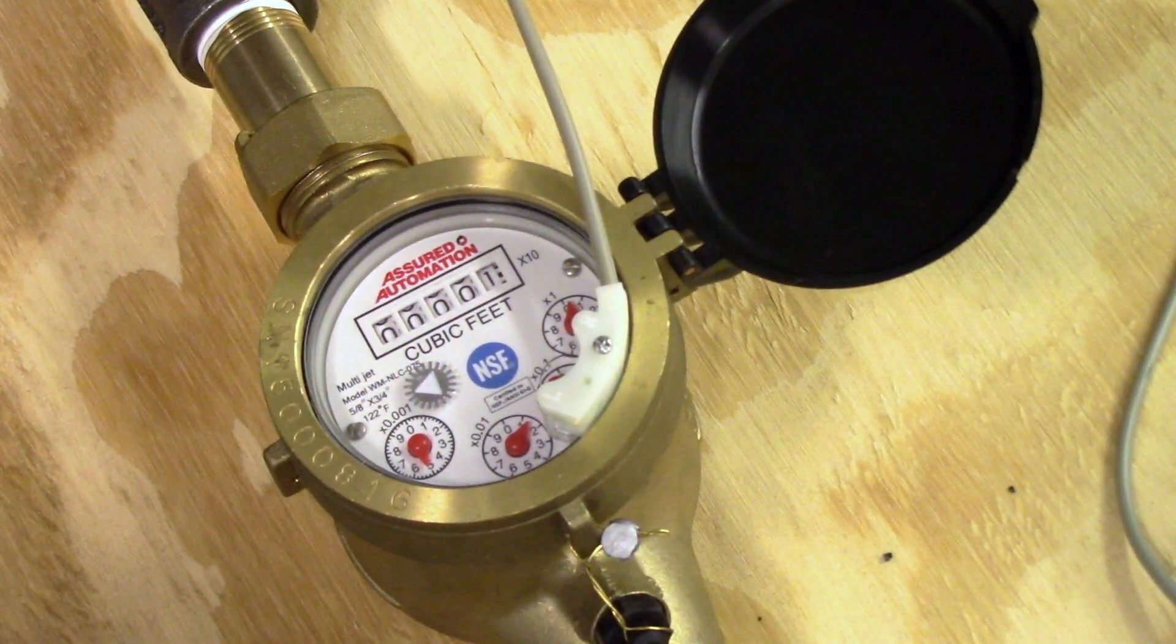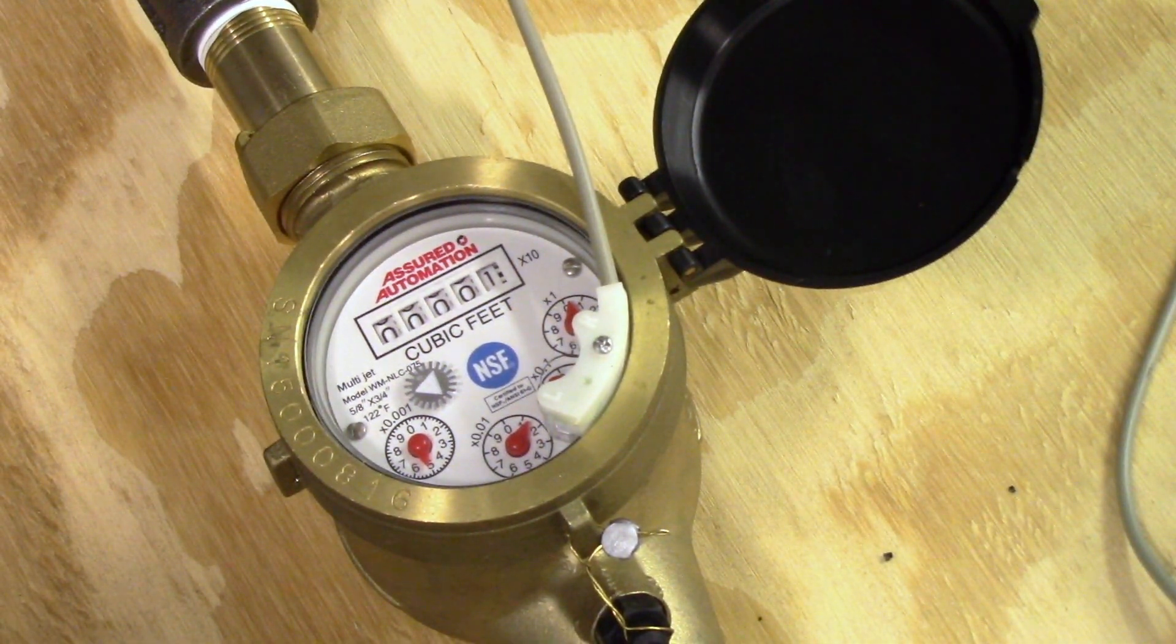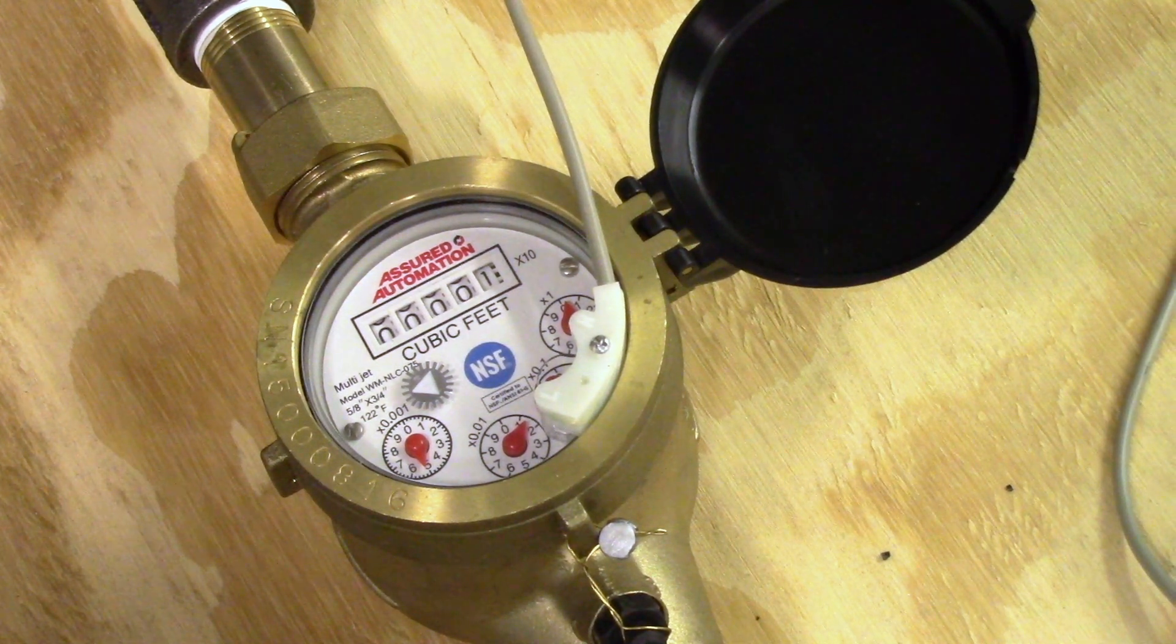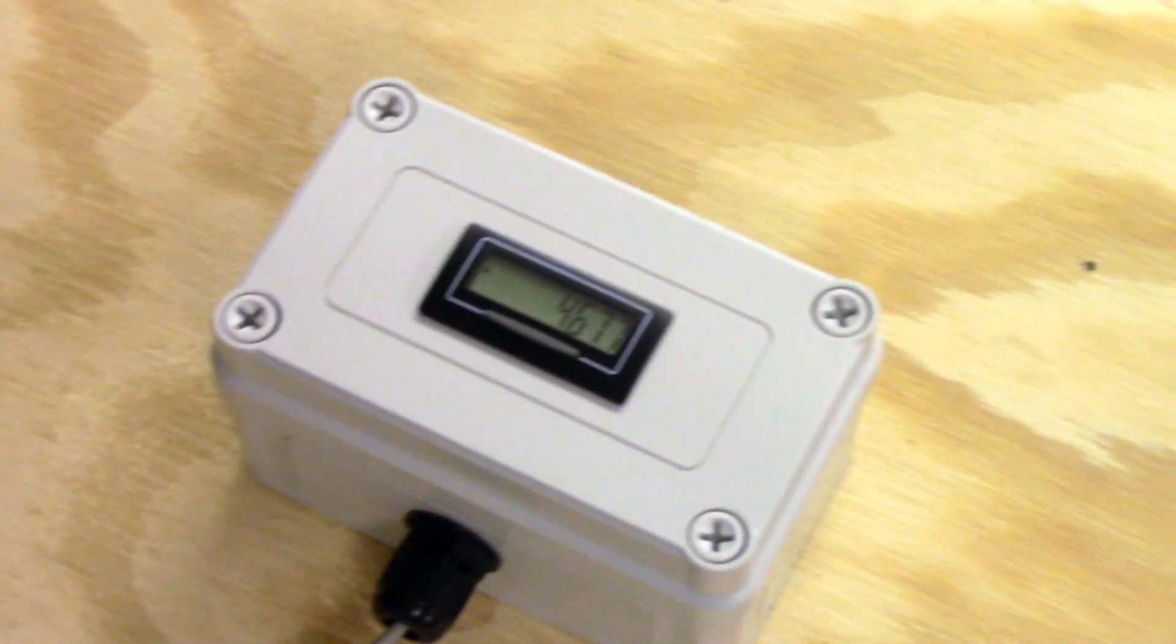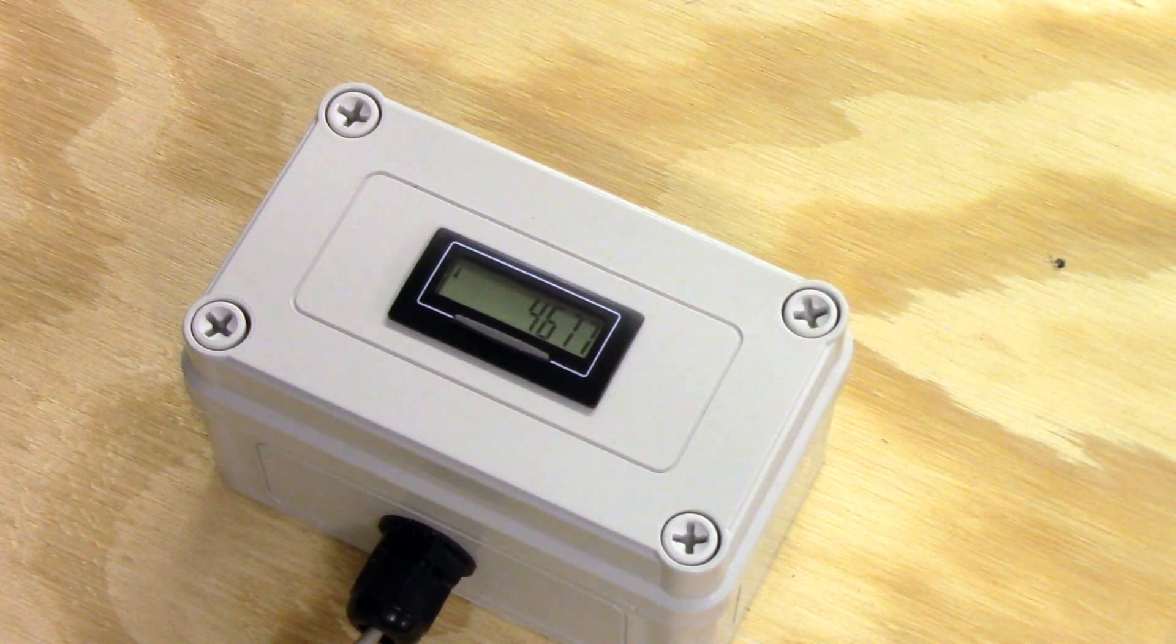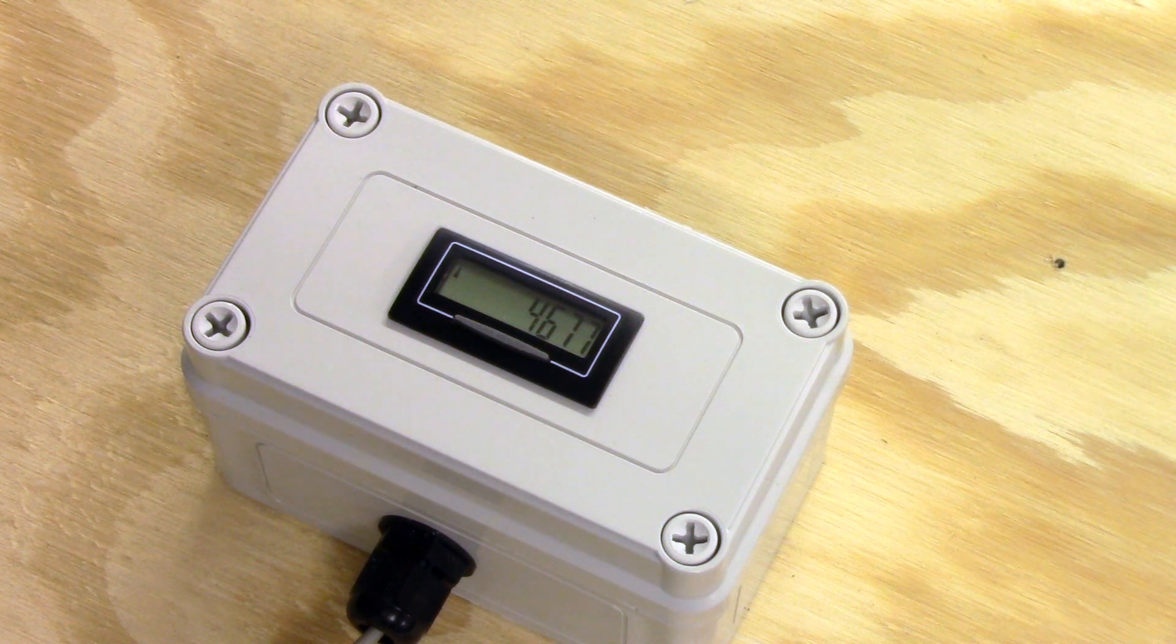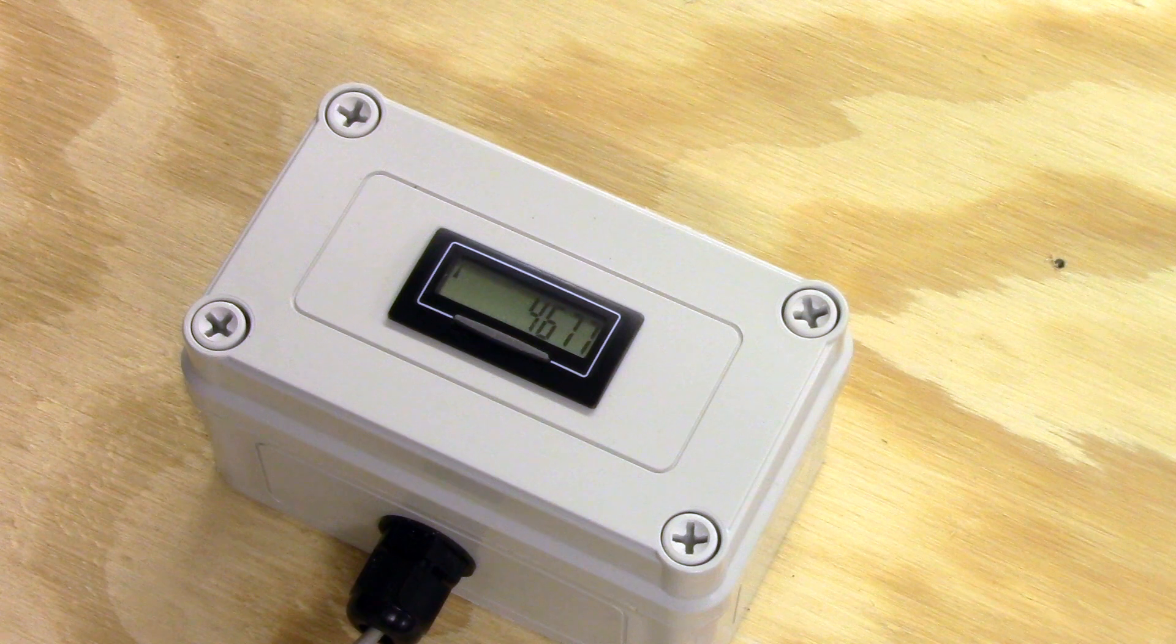Now these meters as you can see are pretty easy to read but you do have to take one number off each dial to make the full number. Whereas here it's just the straight single number full reading. You may have to do some multiplication or division depending on your pulse rate. But if it's one pulse per gallon then this is straight up your gallons reading.